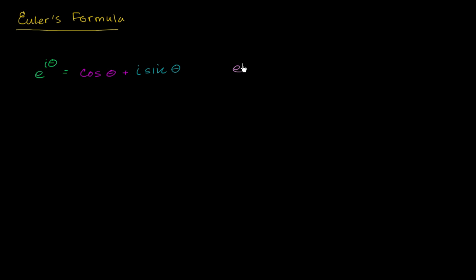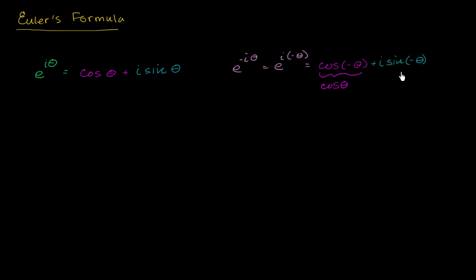E to the negative i theta is the same thing as e to the i times negative theta, which by Euler's formula equals cosine of negative theta plus i sine of negative theta. Cosine of negative theta is the same thing as cosine of theta, and sine of negative theta is the same thing as negative sine of theta. So this simplifies to cosine of theta minus i sine of theta.